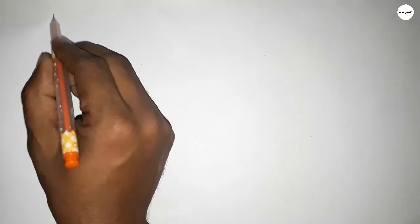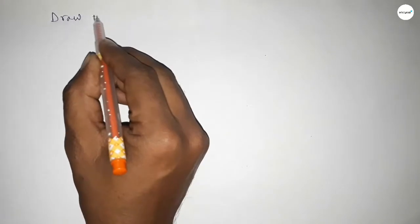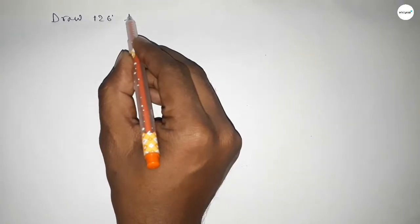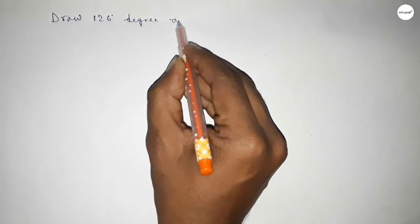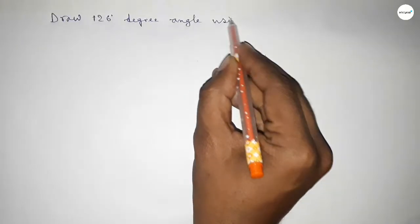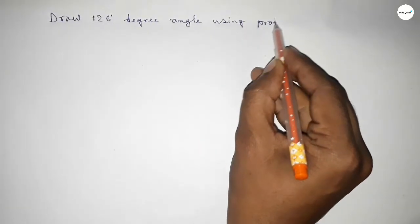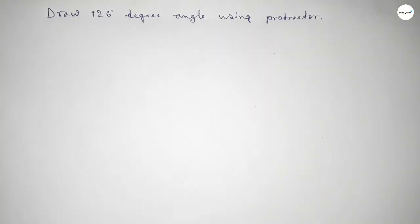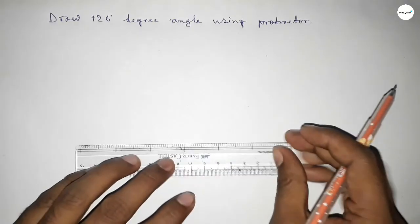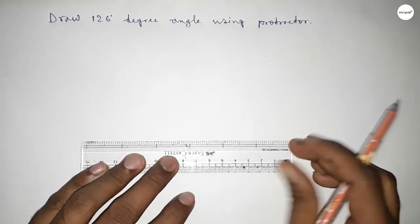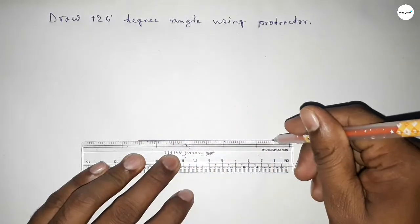Hi everyone, welcome to SI Share Classes. Today in this video we have to draw a 126 degree angle by using protractor. So let's start the video. First of all, we have to draw here a straight line of any length.